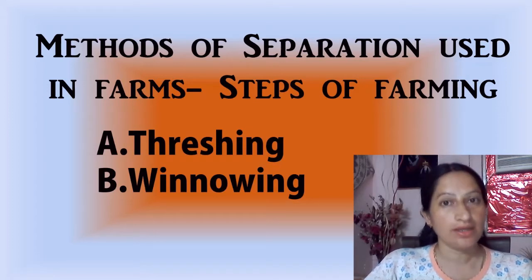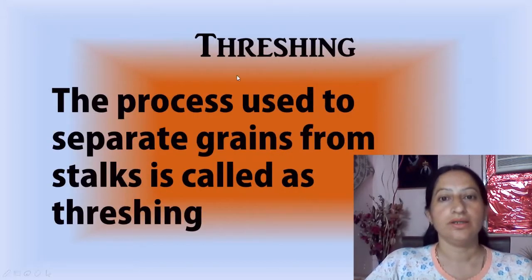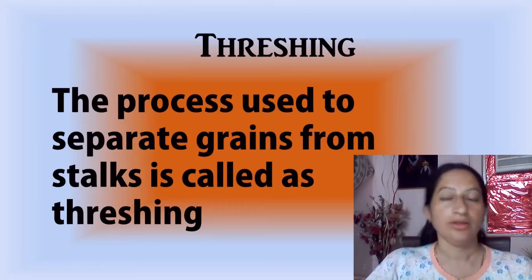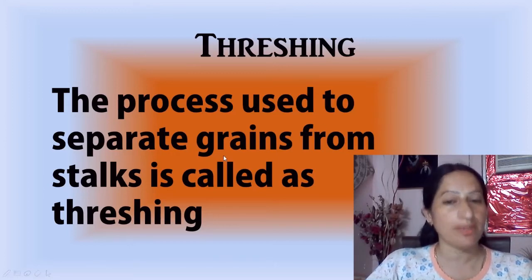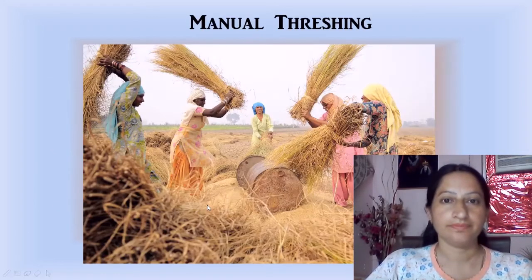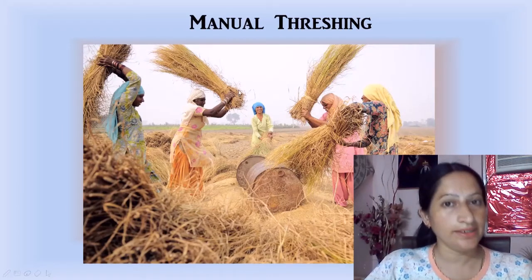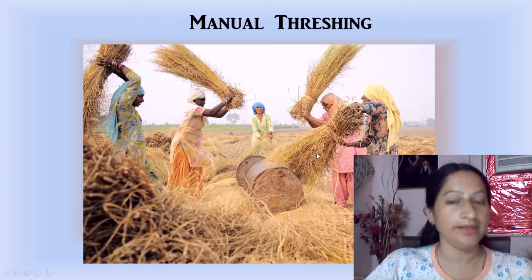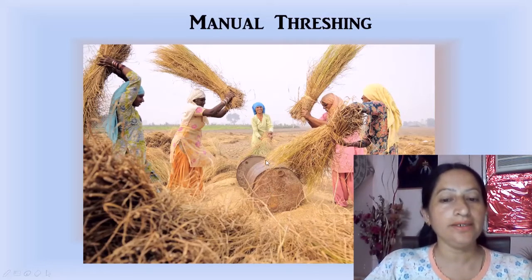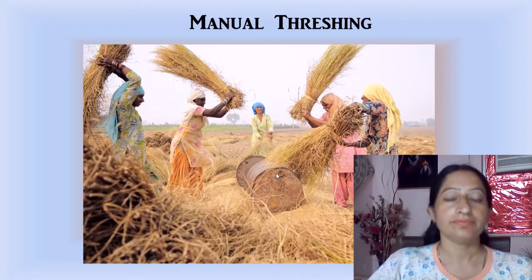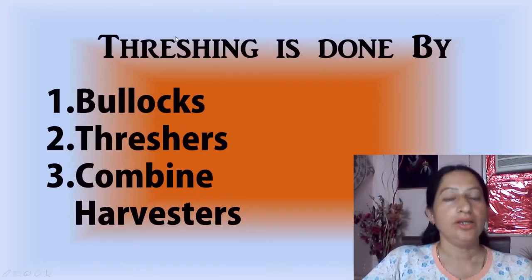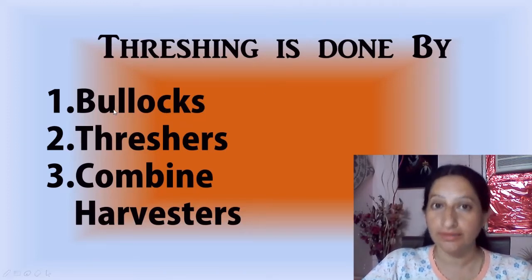Threshing is the process used to separate grains from stalks. You can see ladies doing threshing here in the farm — they are taking the stalks in hand in bundles and beating them on some containers so that the grains get separated from the stalk.